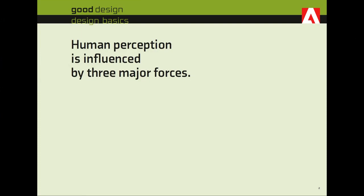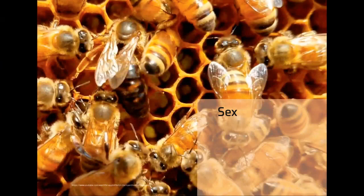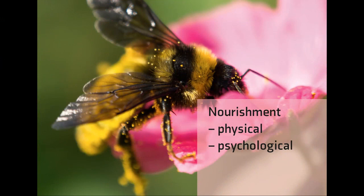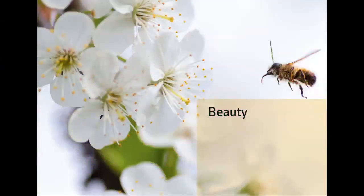Before getting to the 10 rules, let's look at the three things that govern human perception, which I'm taking from Michael Pollan's latest book. The first force is sexuality — keep that in mind when thinking about design. The second is nourishment — psychological as well as physical. We're teachers because we love giving psychological nourishment. The third force guiding human perception is beauty, and we underestimate its power.